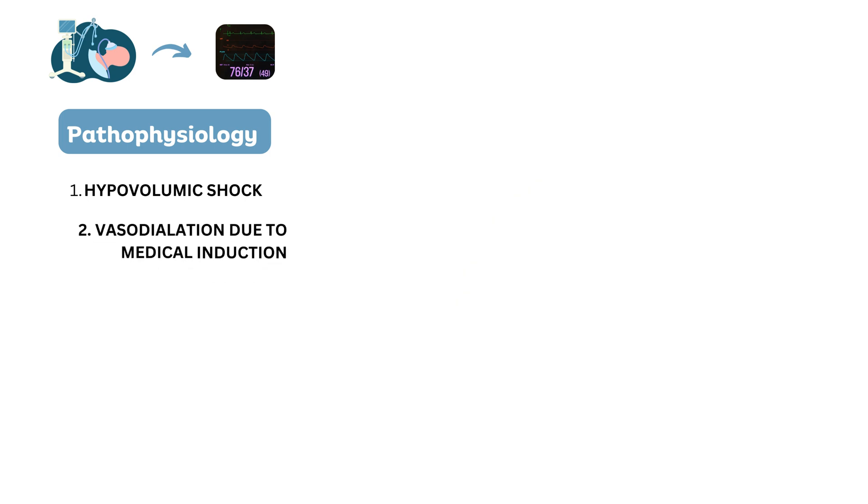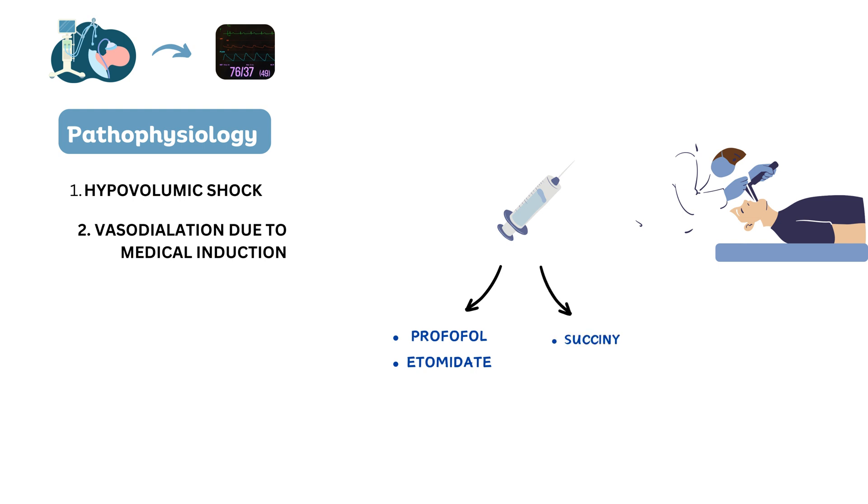Next, vasodilation due to medical induction. Certain medications used during intubation, such as induction agents like propofol, etomidate, and muscle relaxants like succinylcholine or rocuronium, can lead to vasodilation, resulting in a decrease in systemic vascular resistance and blood pressure.